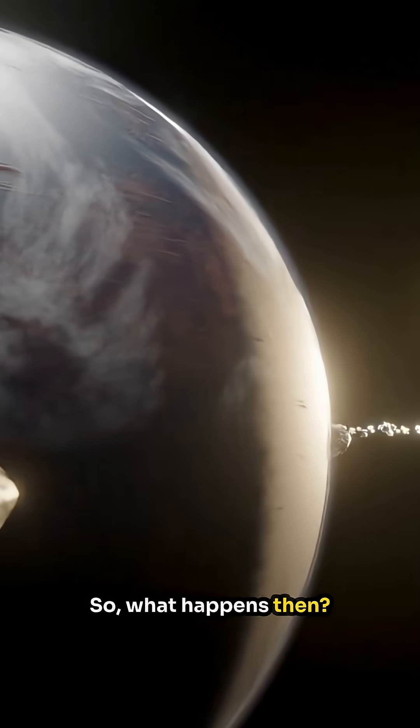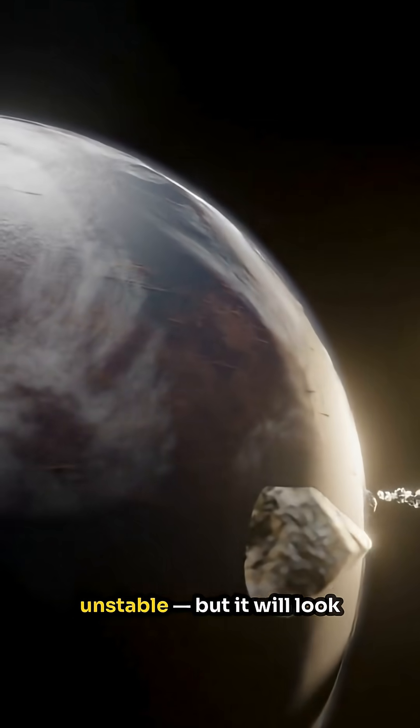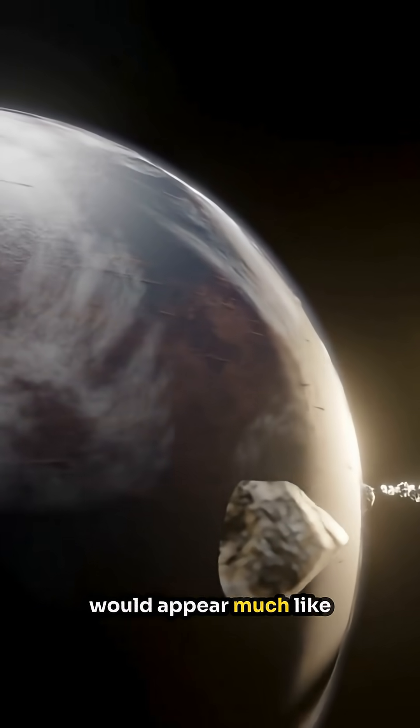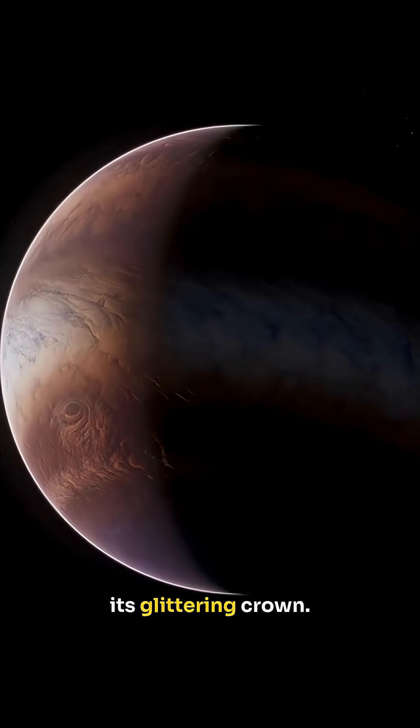So what happens then? The planet itself won't be destroyed or unstable, but it will look completely different. Without its rings, Saturn would appear much like a pale version of Jupiter, still massive but missing its glittering crown.